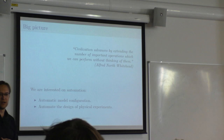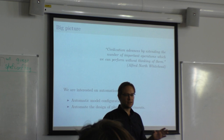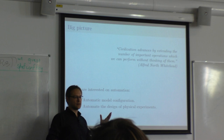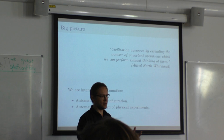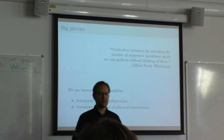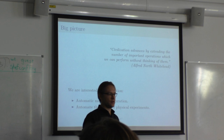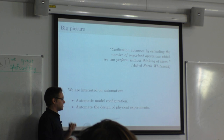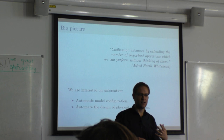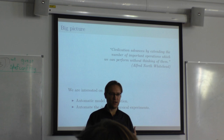We are going to be interested in two main aspects of automation. One is automatic model configuration — given a dataset or problem, how do we select the best model, or tune the parameters of a chosen model? The second is automatic experimental design: if I need to collect data to answer a question, how should I come up with an automated procedure to do that efficiently?